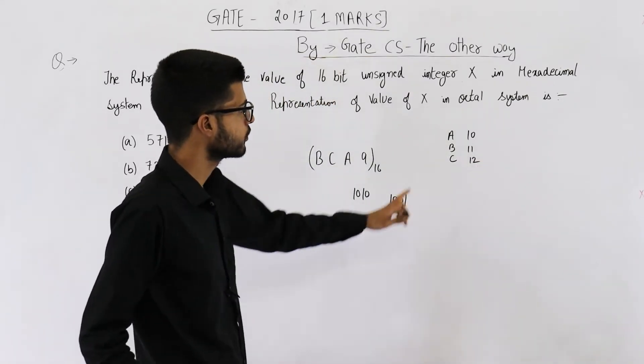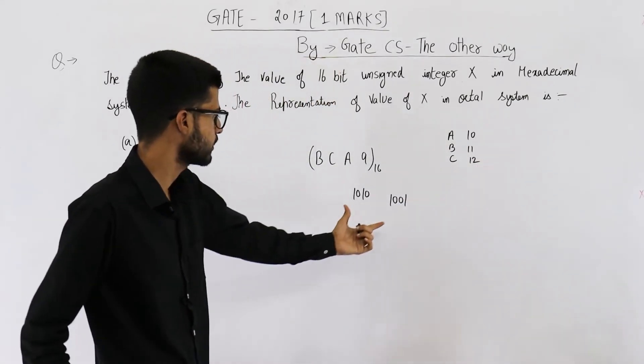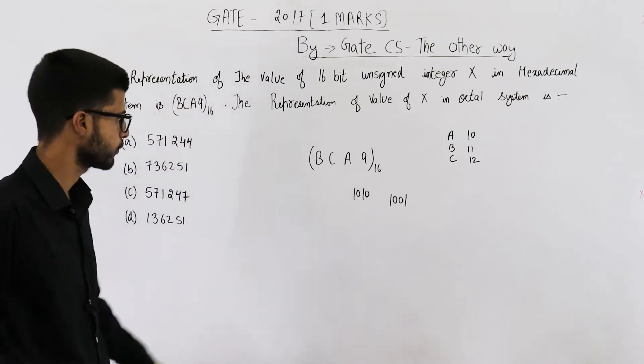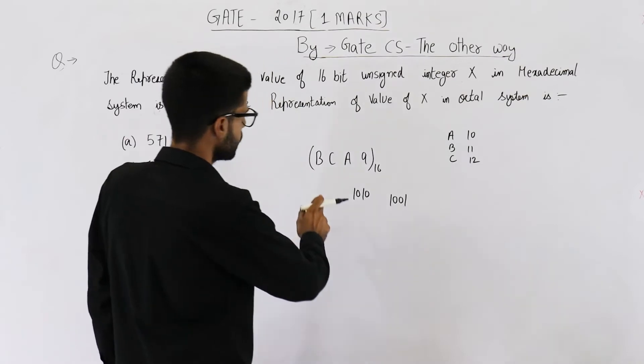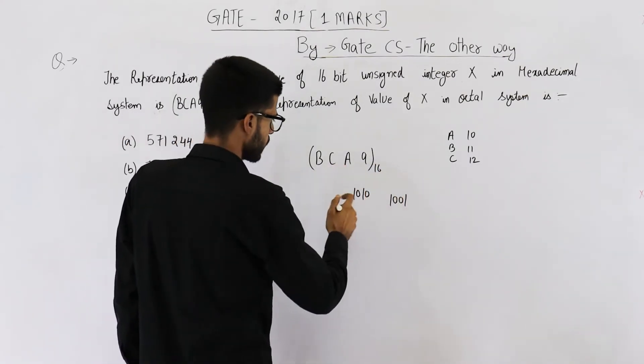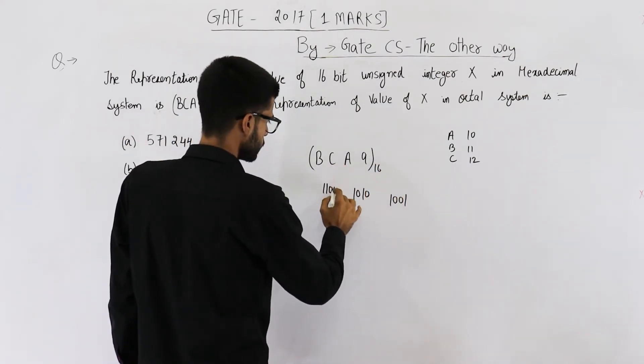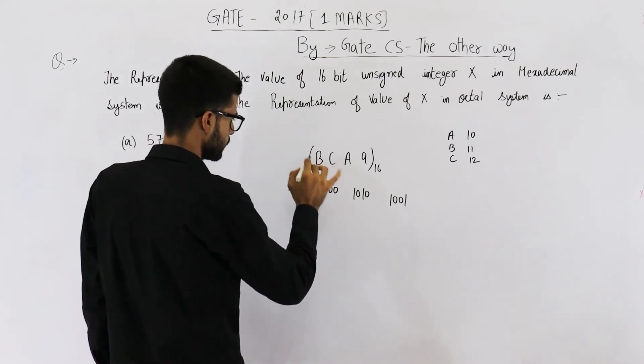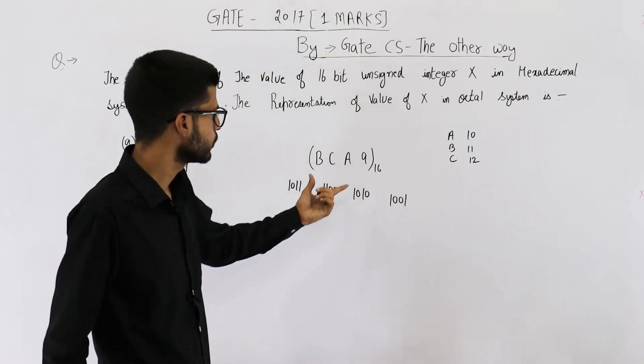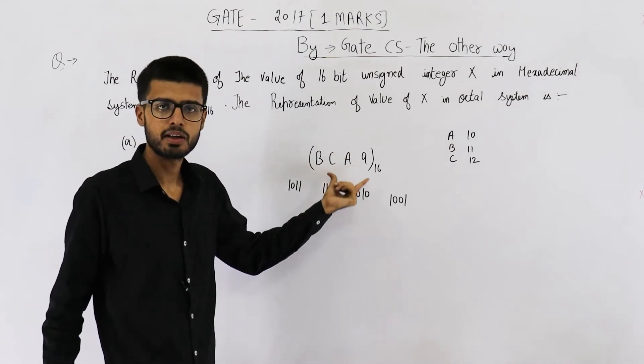So B is 11. Anyways let's see if we could write our answer from these two numbers only. Or let's just complete it. So C is 12, 12 means 1 1 0 0. B is 11, 11 means 1 0 1 1. So we have converted this number into binary.